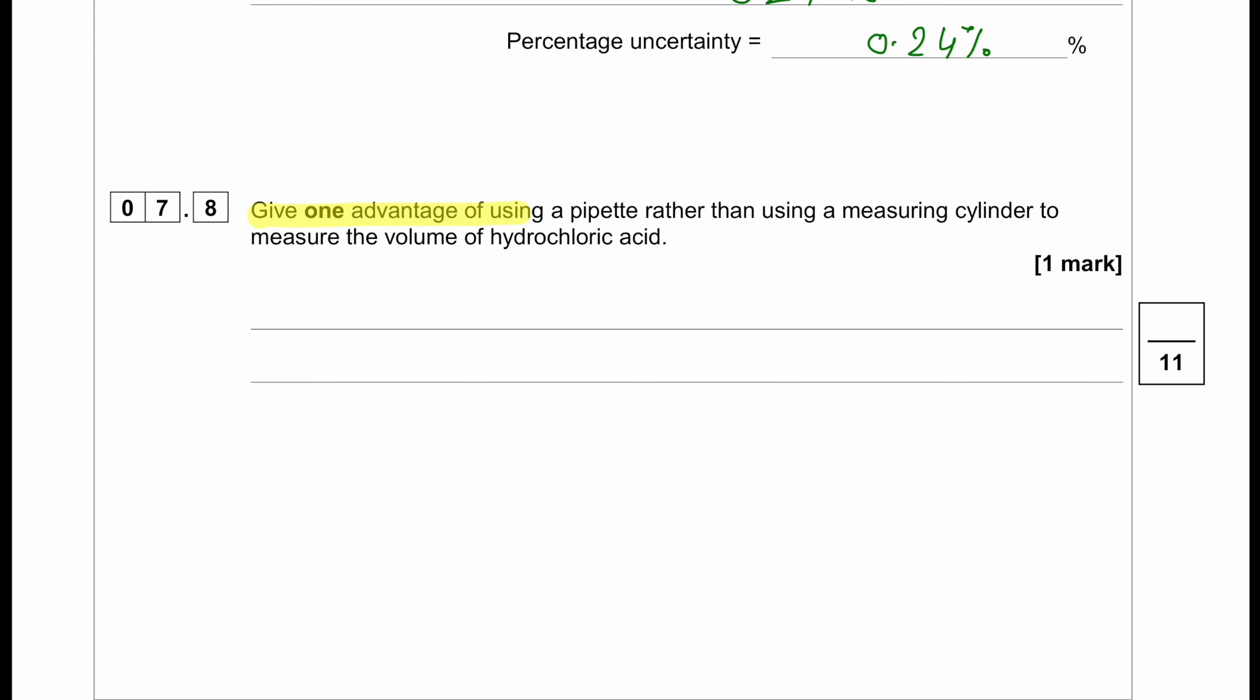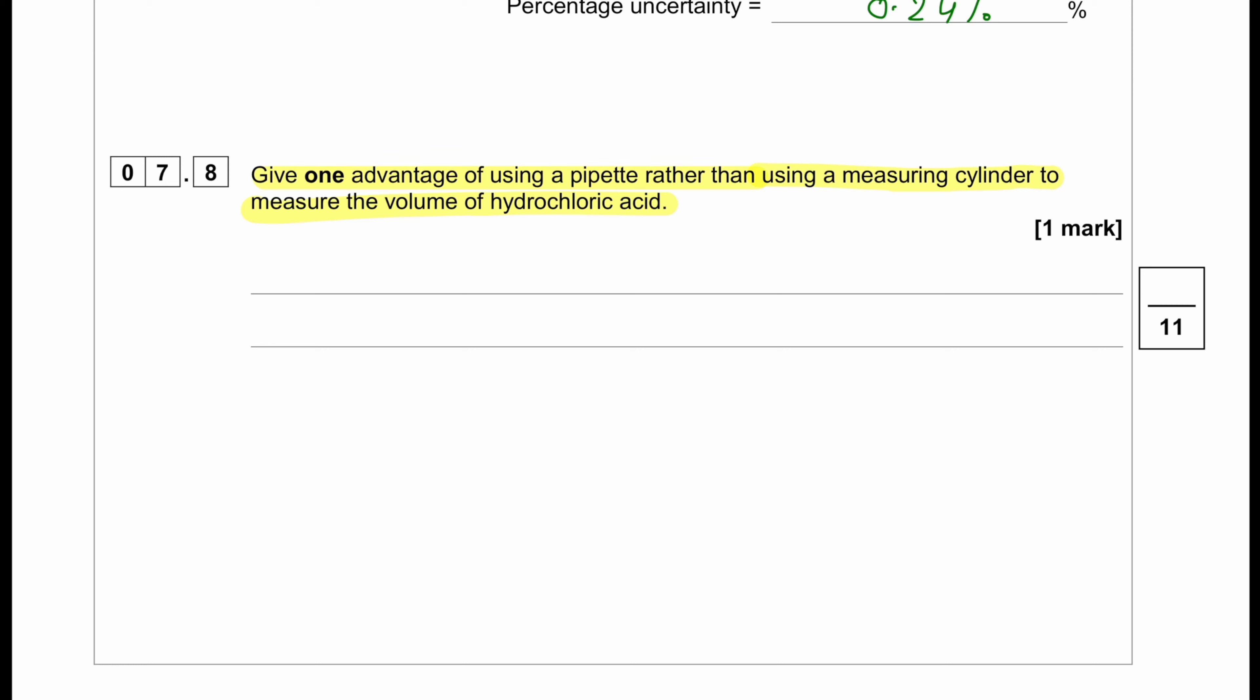Give one advantage of using a pipette rather than using a measuring cylinder to measure the volume of hydrochloric acid. So pipette measures the volume more accurately. The problem with measuring cylinder is it has a greater percentage of uncertainty, which is why we are not going to use the measuring cylinder.